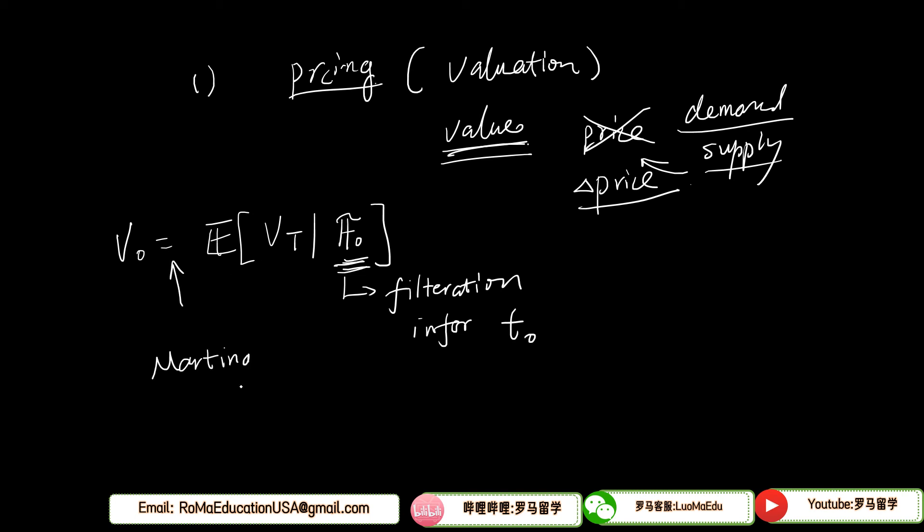The asset can be anything. It can be option or real estate. It can also be any other asset. It can be bond, option, swap, or swaption. Swaption, by the way, is the option of swap. So here, the underlying is a swap.